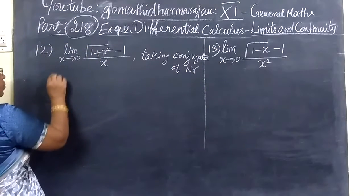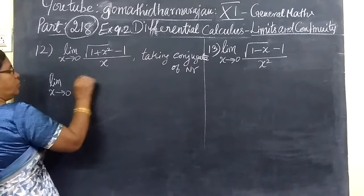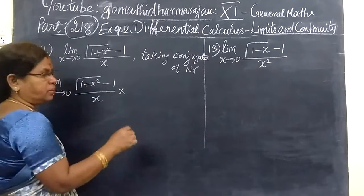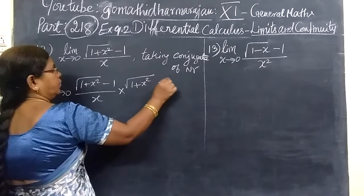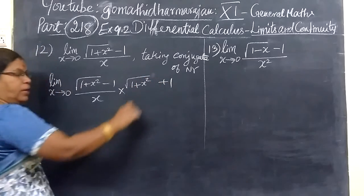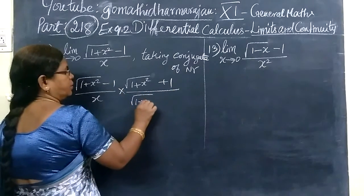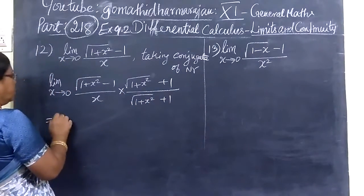So, limit x tends to 0, root of 1 plus x squared minus 1 by x. Write as it is. Then 1 plus x squared square root plus 1. Which is root, not right. Here 1 plus x squared, then plus 1. And these equals...